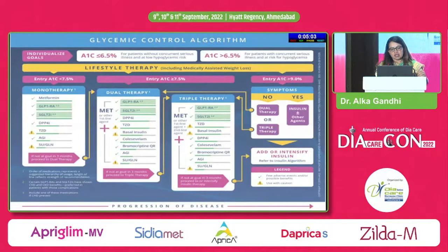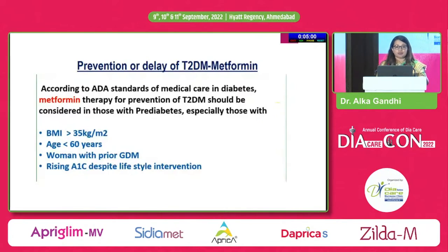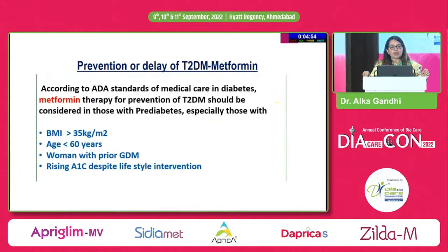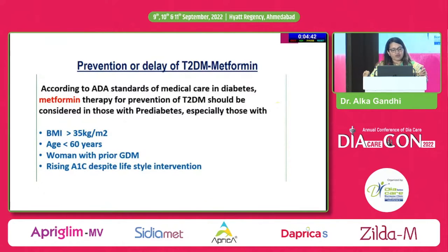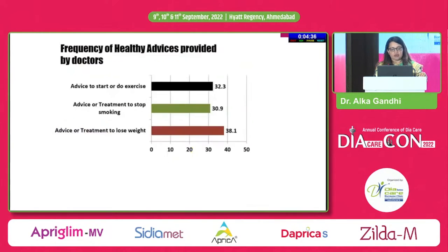The latest recommendation also addresses metformin use in pre-diabetes. According to ADA standard of medical care, metformin therapy for prevention of type 2 diabetes should be used especially in those with BMI more than 35, age less than 60, history of gestational diabetes mellitus, and rising A1C despite lifestyle intervention.